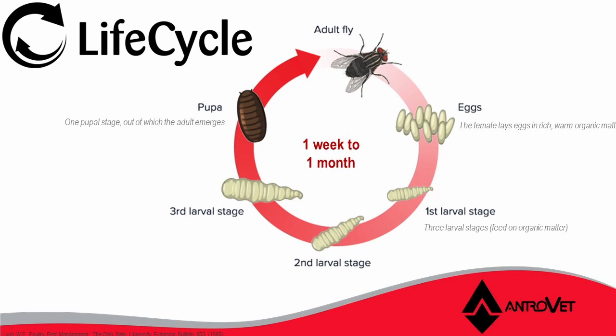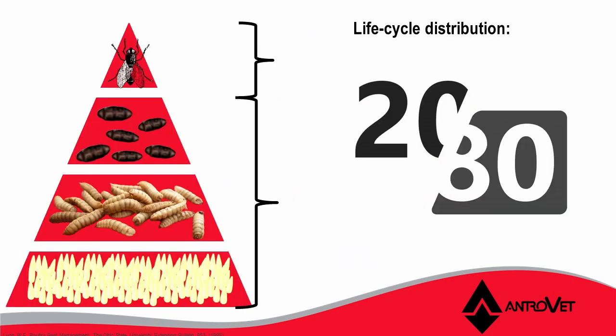To control flies effectively, we need to look at their life cycle — how do they breed, how much do they breed, and where do they breed? An adult fly lays its eggs, and out of the eggs the larval stages hatch — first, second, and third — then they pupate, and out of the pupa comes the adult fly. A lot of people can't believe that only 20% of the fly population are adult flies. The other 80% is situated in the manure in the form of pupa, larvae, and eggs. This is critical to understand when controlling flies so that we use the correct actives in the correct places.